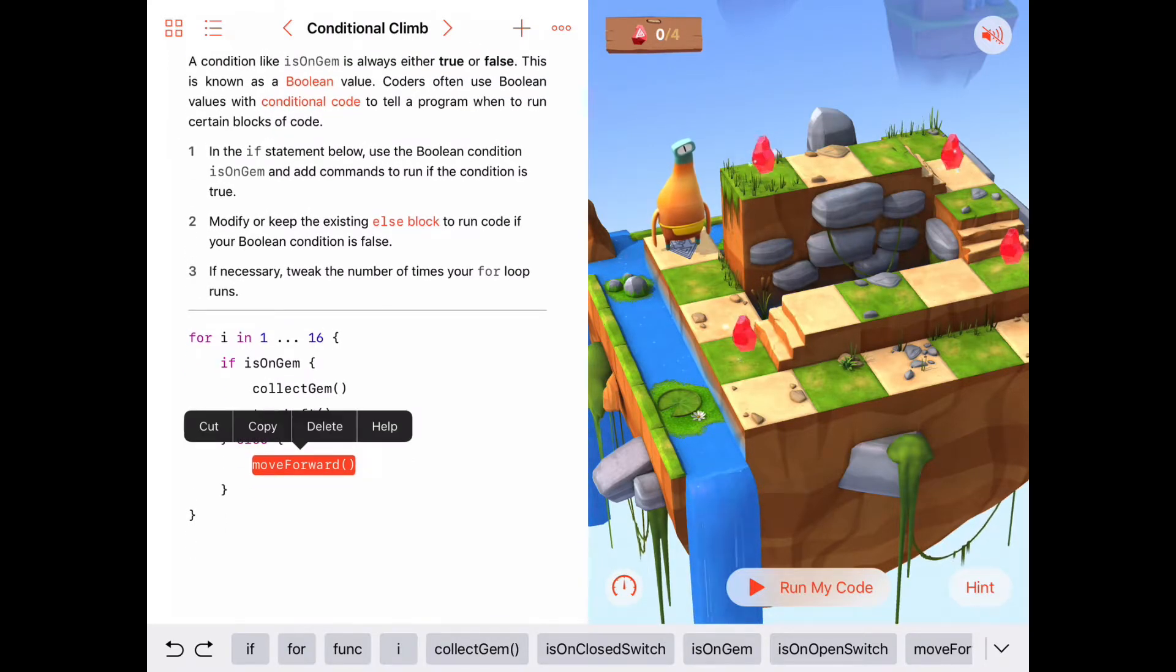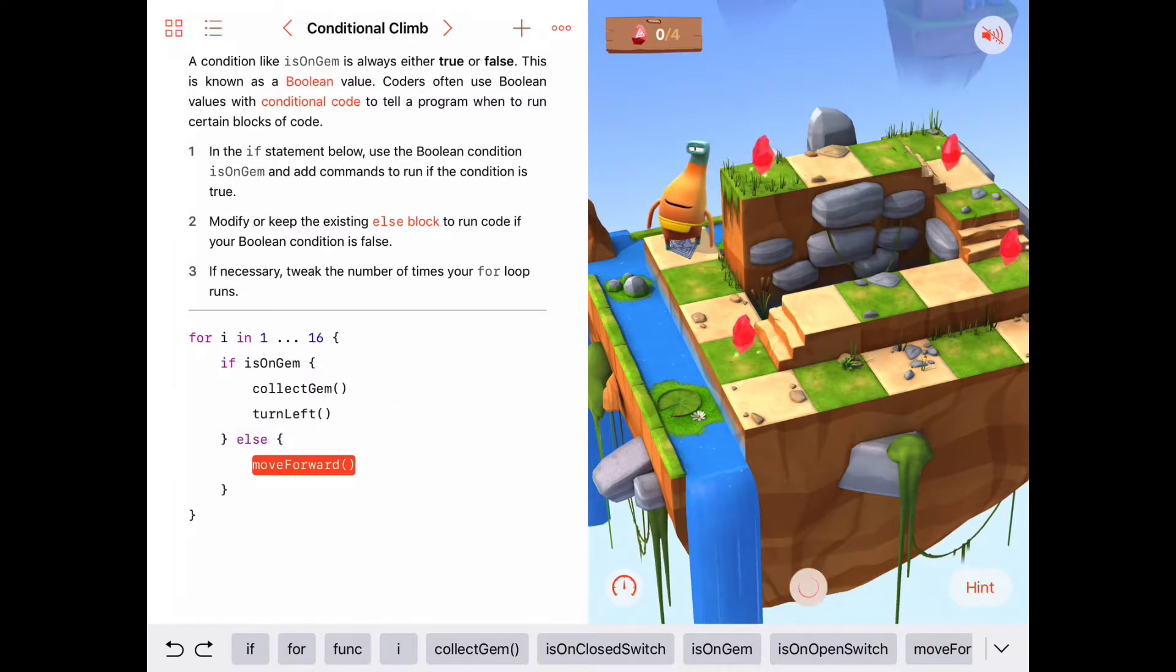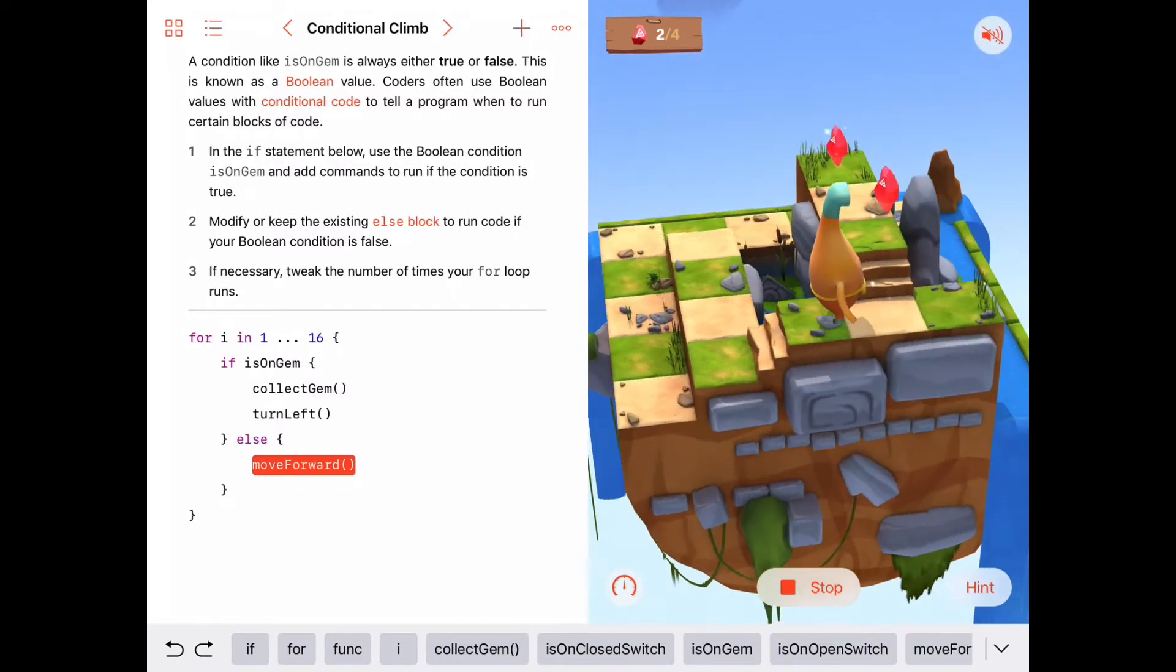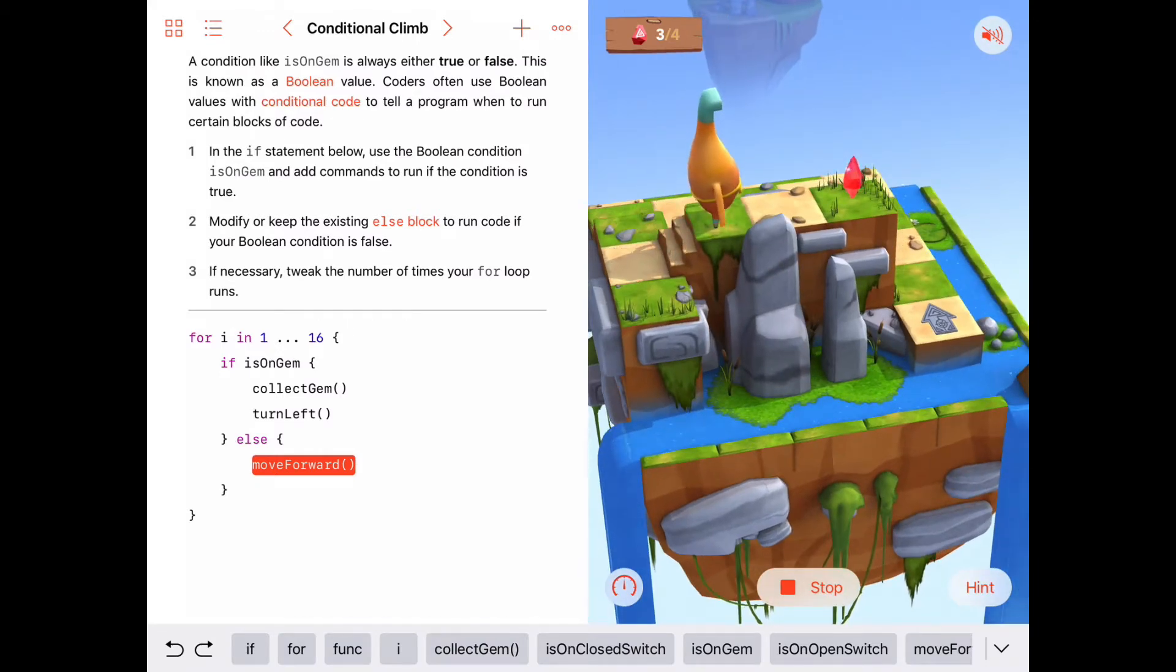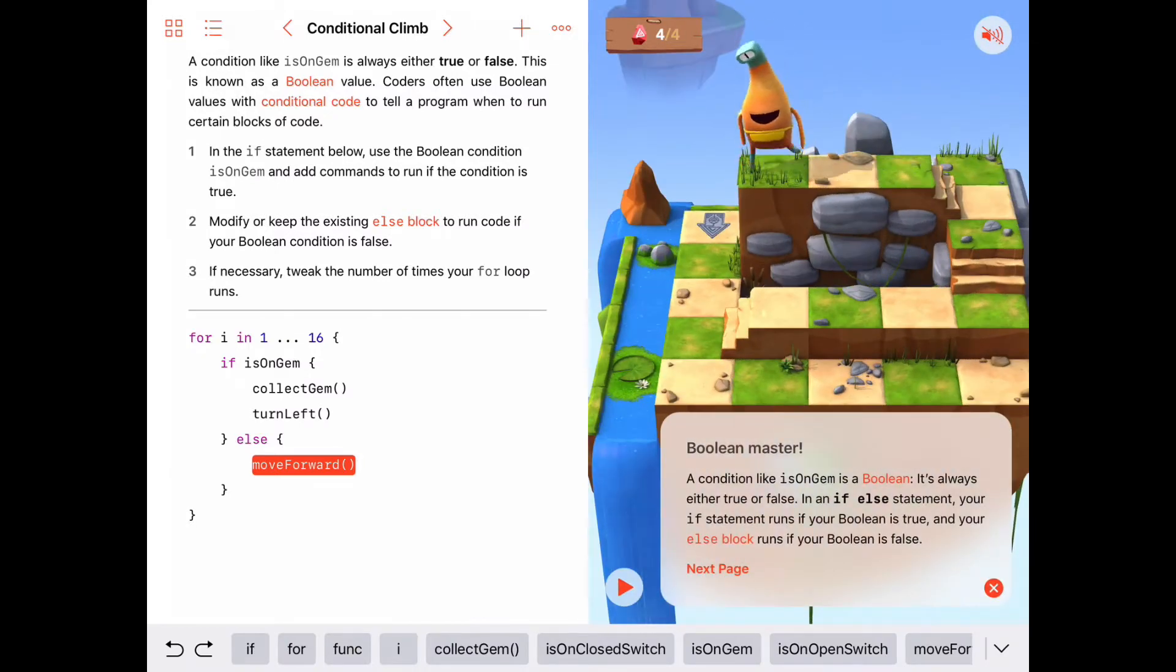All right, let's just try running this here and we'll see what happens. So here goes Byte. Is he on a gem here? No, move forward. No, move forward. Yes, he is on a gem, so he collects it and turns to the left. And he's not on a gem, not on a gem, not on a gem. He is on a gem, so he collects it, move to the left. He's not on a gem. He is on a gem, collect it, turn to the left. And not on a gem, not on a gem, and is on a gem, so he collects it, turns to the left. We made it. Good.